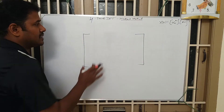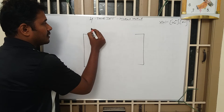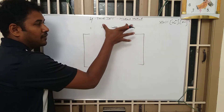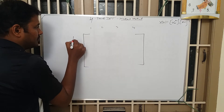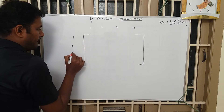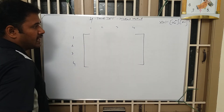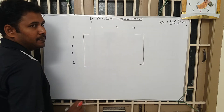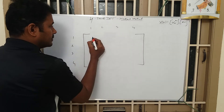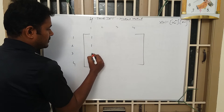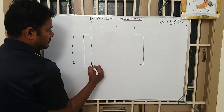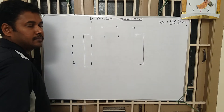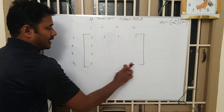We know that it is a 4×4 matrix, so it should have 4 rows and 4 columns. Always the first row and the first column are going to be 1. So we will be left with 9 elements.